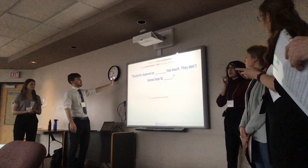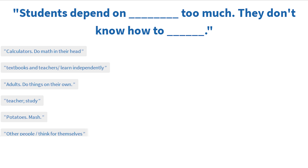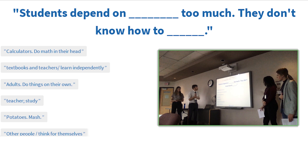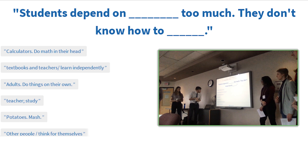We want you to fill in the blanks for this sentence: students depend on blank too much — they don't know how to blank. Some responses: students depend on calculators too much, they don't know how to do math in their head. Students depend on textbooks and teachers too much, they don't know how to learn independently. They depend on adults to do things on their own.